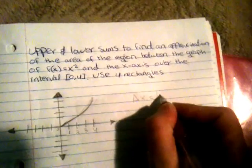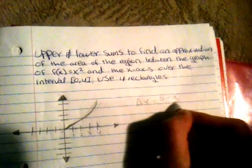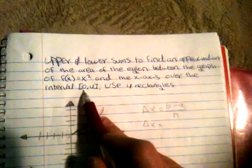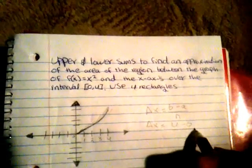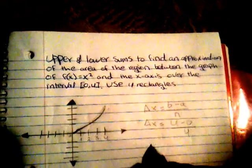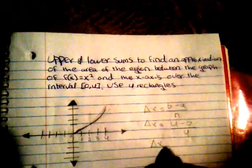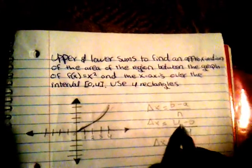Then first we will find our delta x formula. Delta x formula is equal to (b - a) / n. So our delta x will equal, our b is 4 and our a is 0, so we have 4 - 0 over our n which is 4 rectangles, over 4.